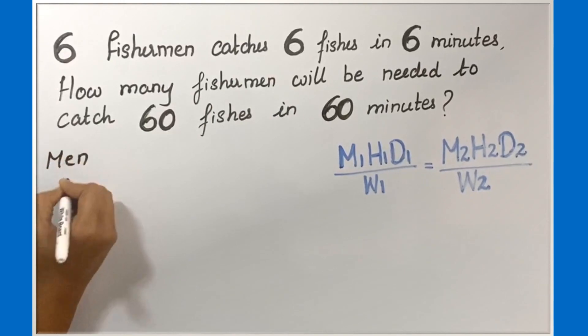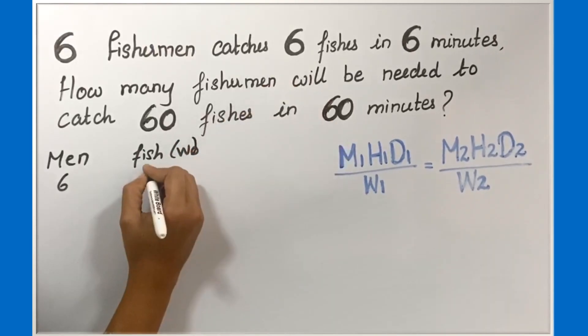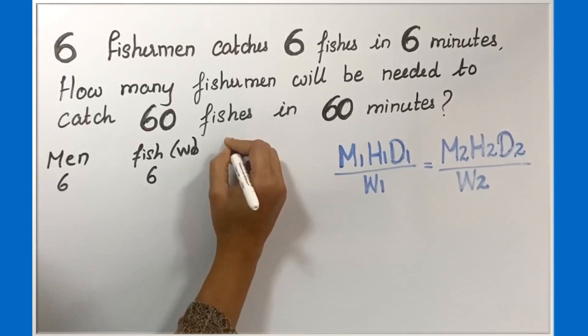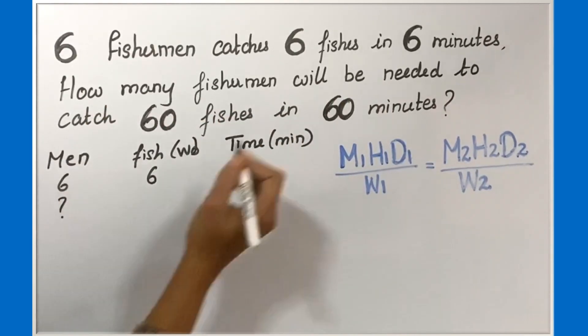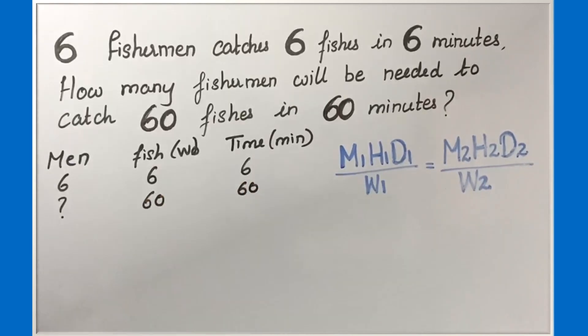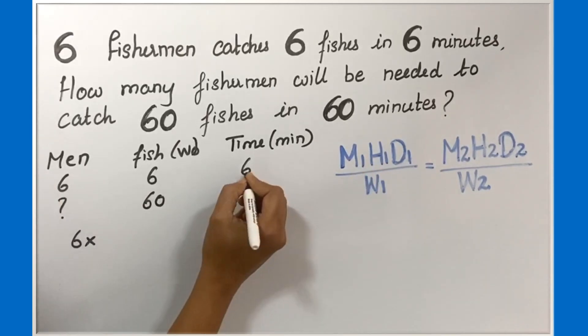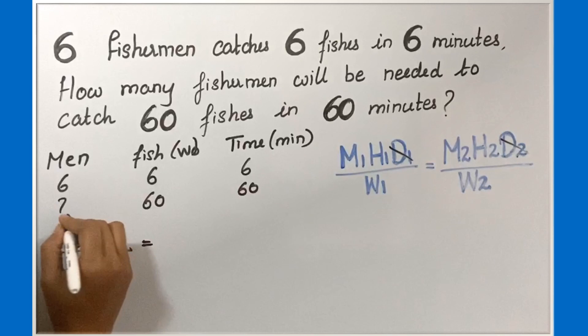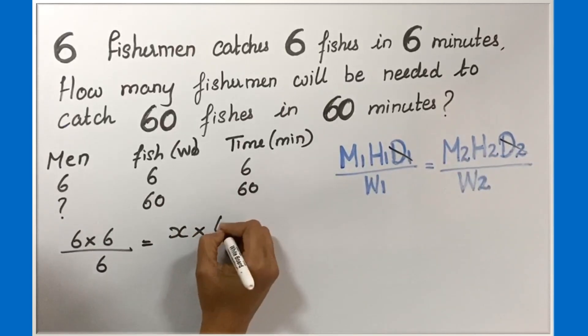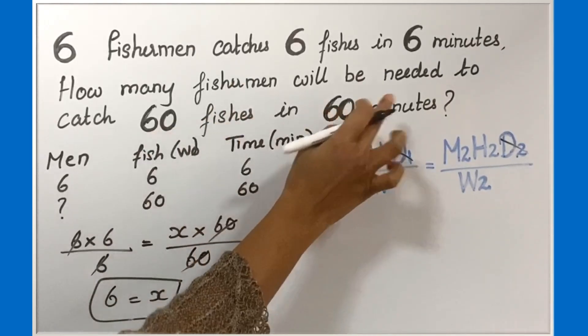6 fishermen catch 6 fish in 6 minutes. How many fishermen will be needed to catch 60 fish in 60 minutes? M1 is the men - 6. H1 is the minutes - 6 minutes. D1 is not given, so let's cancel that. W1 is 6. M2 is unknown, H2 is 60 minutes, W2 is 60. Cancel, 6 equals X. So 6 fishermen will be needed to catch 60 fish in 60 minutes. Answer is 6.